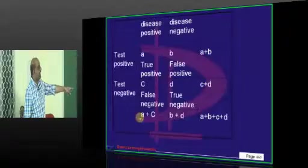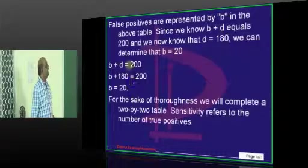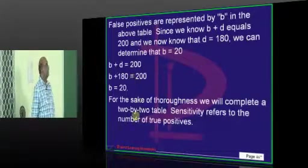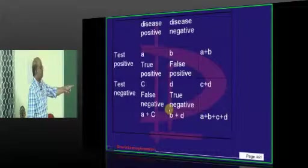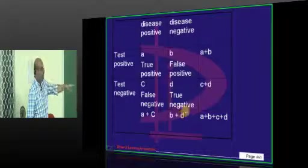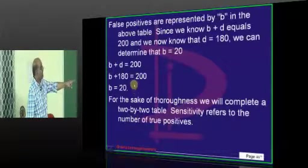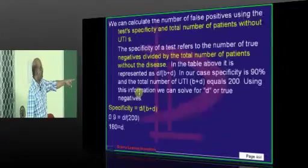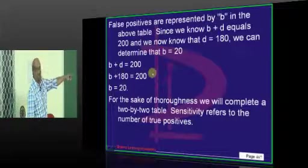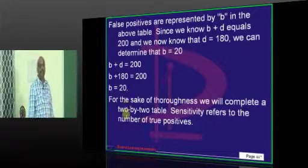But what is D? D is true negatives. Then how do you calculate false positives? Already you know false positives plus true negatives together is equivalent to 200. Already you got true negatives equal to 180. So what is left over is B, false positives. How many are there? 200 minus 180, which gives you 20. So false positives are basically 20.